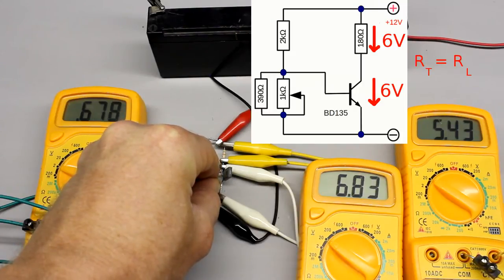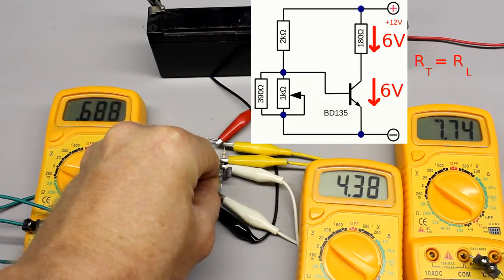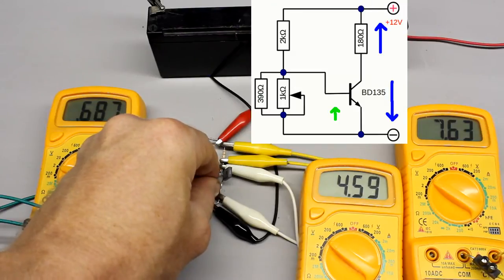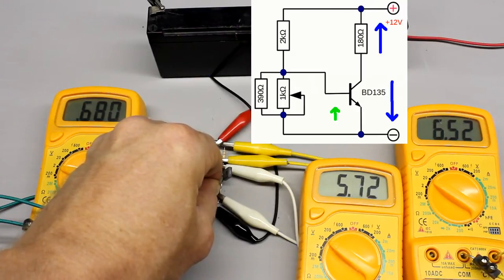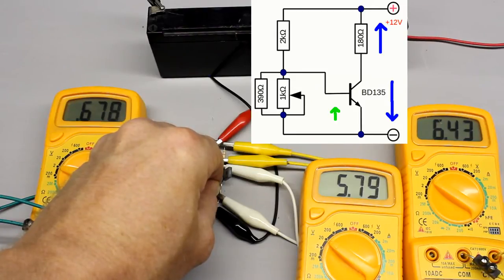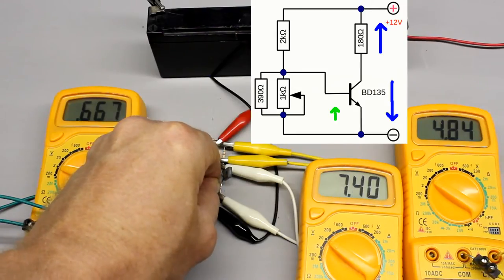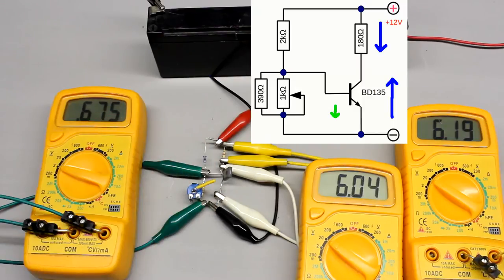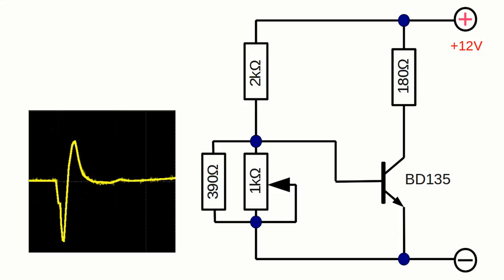Moreover, the variable resistance of the emitter-collector line equals that of the constant load resistor. By increasing the base voltage slightly above the operating point, the voltage drop at the load resistor increases clearly because of the decreasing resistance of the transistor. On the other hand, by decreasing the base voltage slightly, the voltage drop at the load resistor decreases significantly because of the increasing resistance. The alternating input signal has to be added to or subtracted from the direct base voltage adjusted at the operating point.